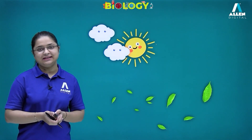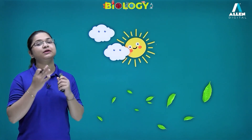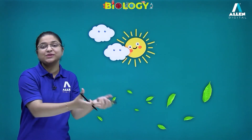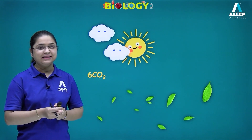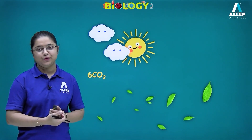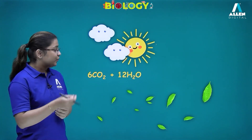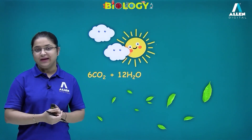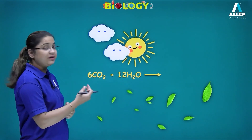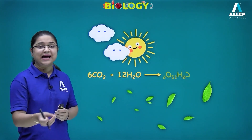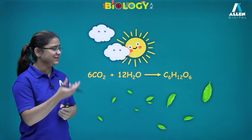Let's understand what plants need for photosynthesis and what is produced as a product. Plants need carbon dioxide, which is a gas they take from the air. They also need water, which they take from the soil. And they produce glucose — C₆H₁₂O₆ — that is the food for the plant.